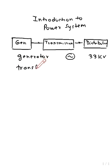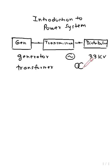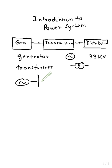A transformer is a static device used to step up and step down the voltage. The generator will generate voltage around 33 kV. The transmission transformer is used to step up the voltage, and the symbol of the transformer in power systems is shown here.